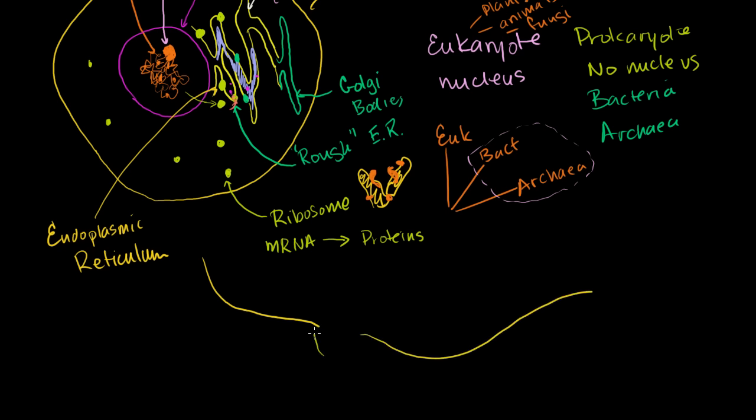This idea of something being surrounded by a membrane and traveling in the cell—the protein takes a little bit of the Golgi body membrane with it. This is called a vesicle. A vesicle is a general term for small things, mostly proteins in the cell, that are floating around and are surrounded by their own little mini-membranes.